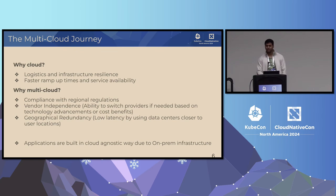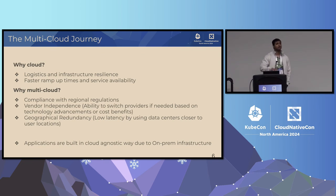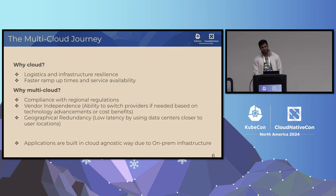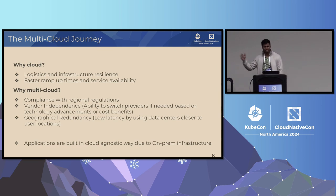For example, some of you may know TikTok and Oracle have a relationship, and anything in the US is in OCI data centers. So that basically means any US Kubernetes clusters are going to be in OCI. But we also have similar relationships with GCP and AWS for EU and rest-of-world regions.